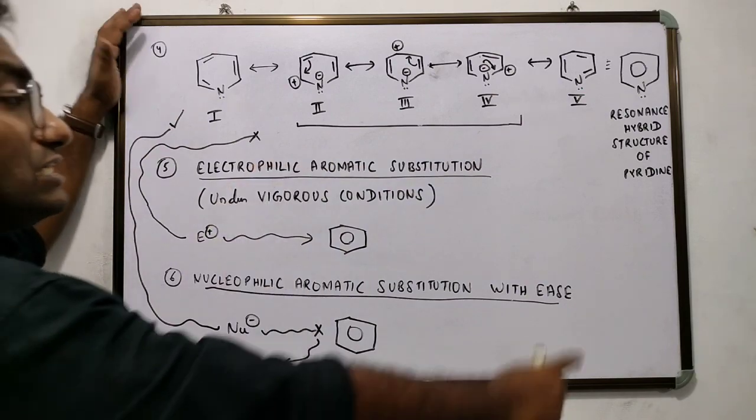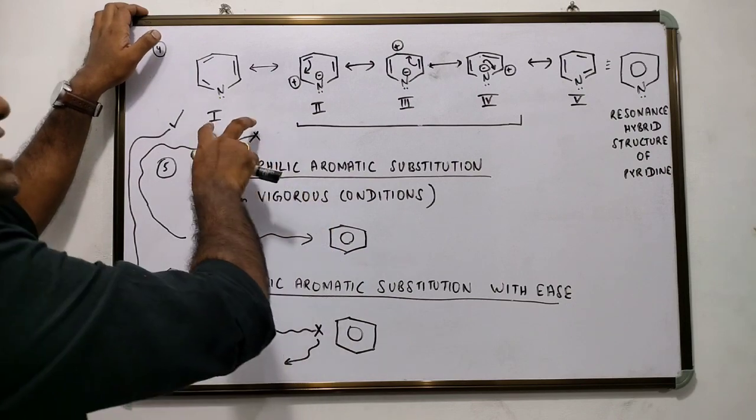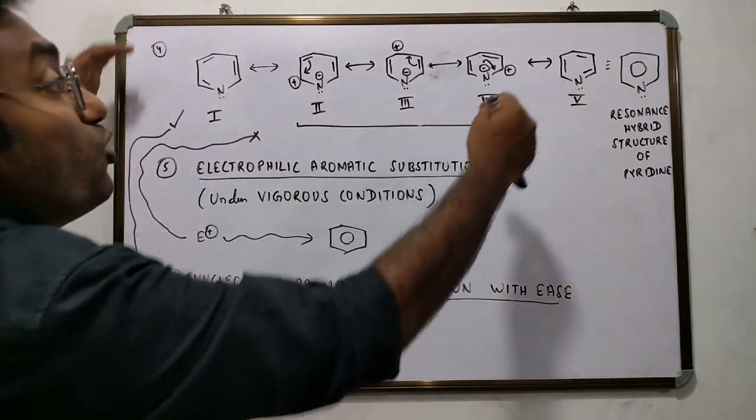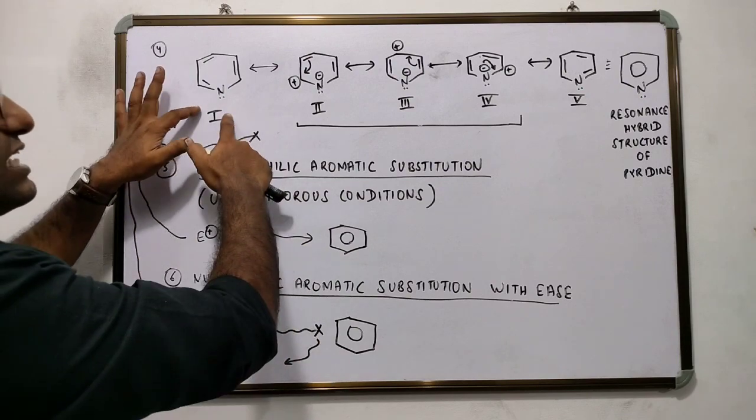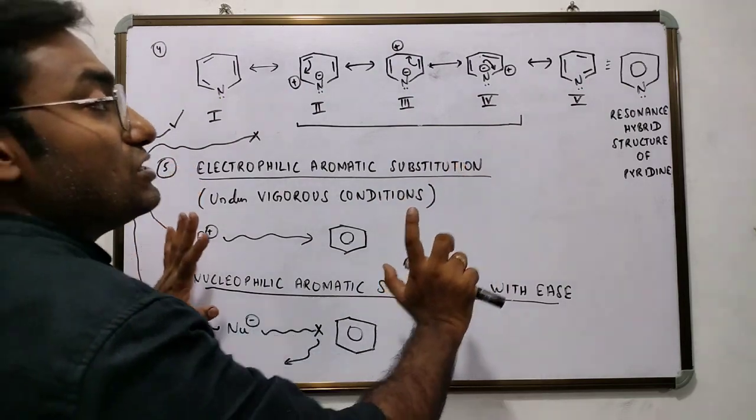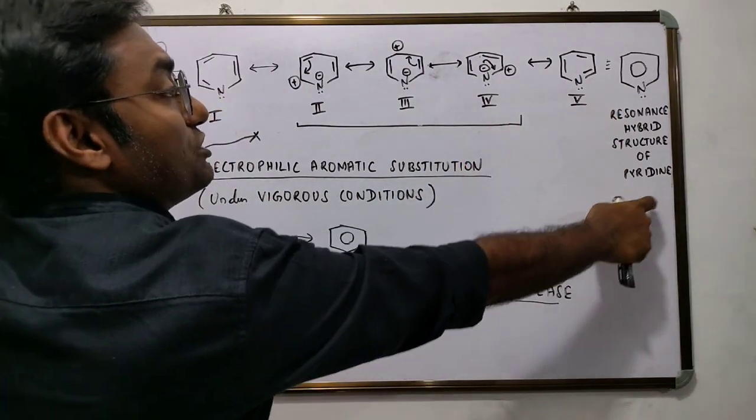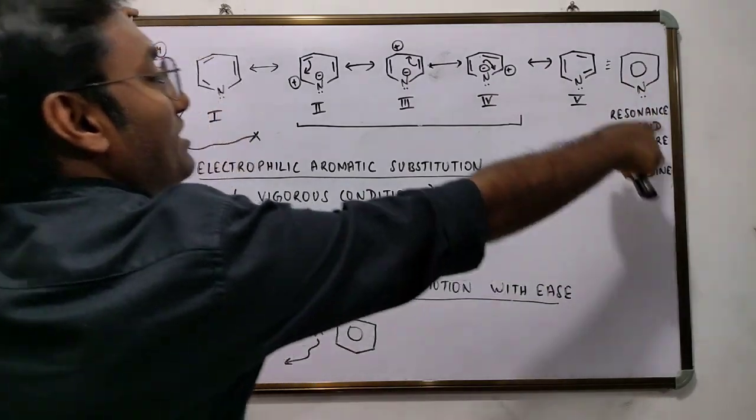As for pyridine, it would prefer to spend its time at thermodynamically lower energy level. And it is for this reason, that structure number 1 and structure number 5, the kekule resonating forms, have a major contribution to the resonance hybrid structure of pyridine.